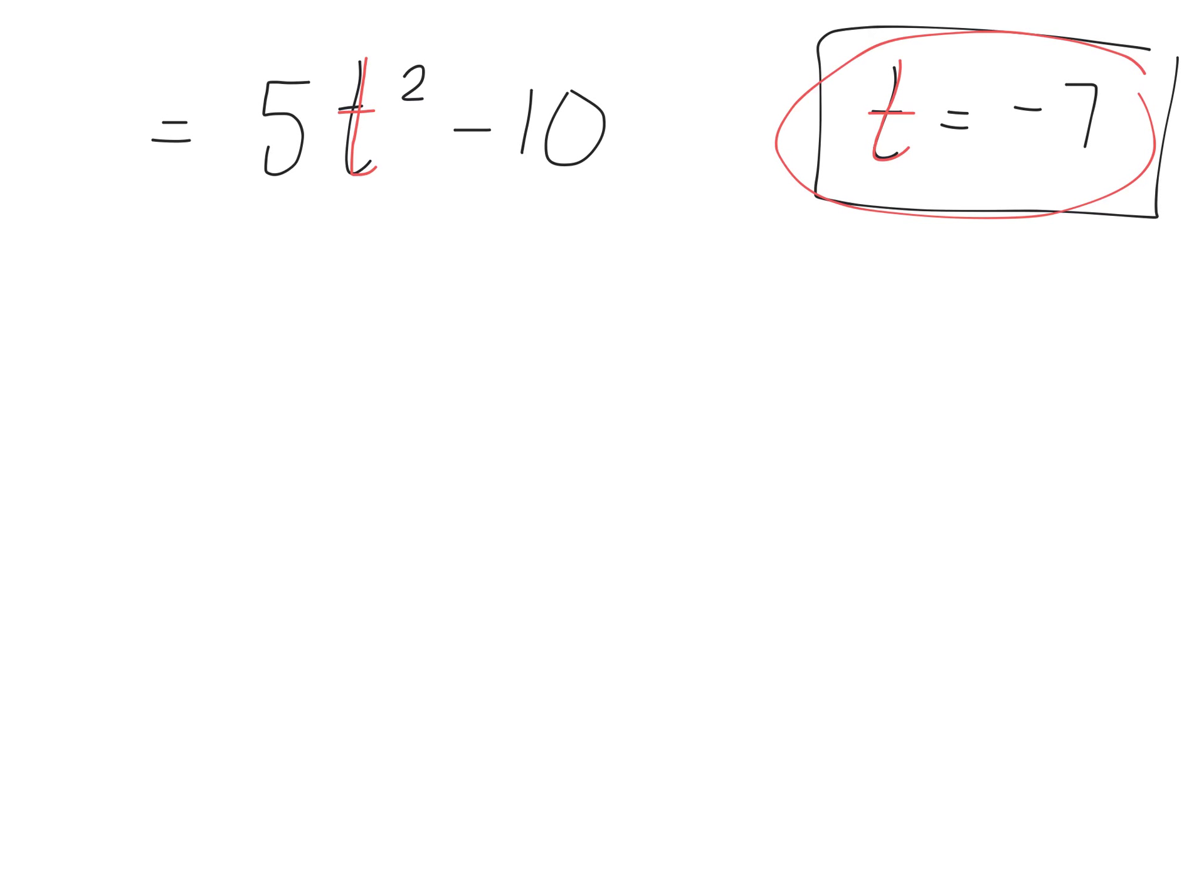So what will I do with that information? What's the very first step here? I'm going to write my 5, I'm going to keep my squared and my negative 10, but instead of writing t, I'm going to write the value of it. So I'm going to put that in brackets, which is negative 7.